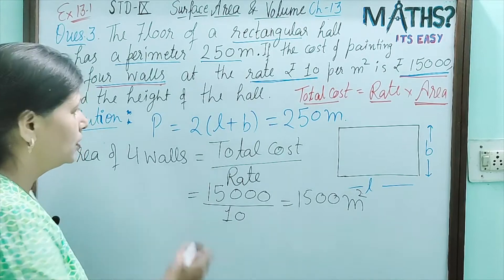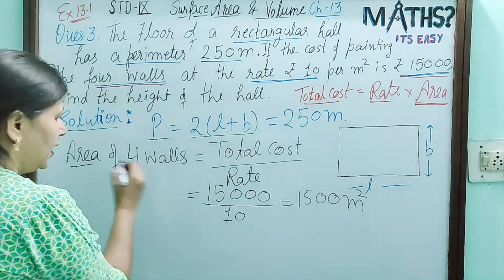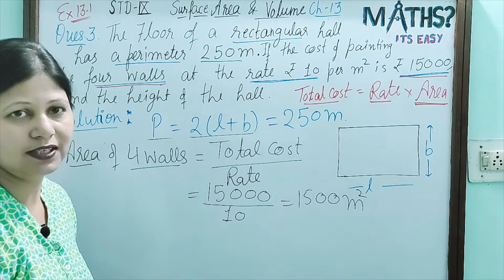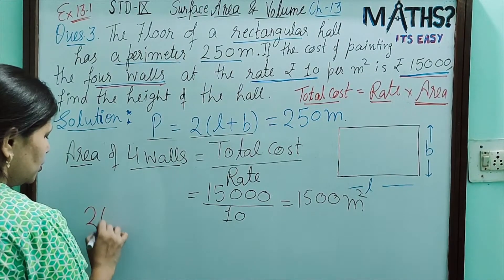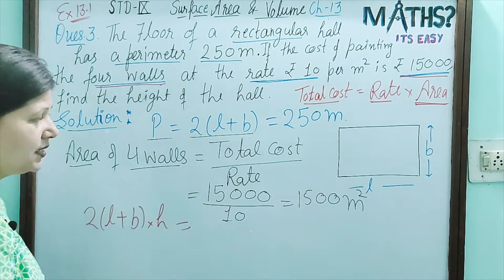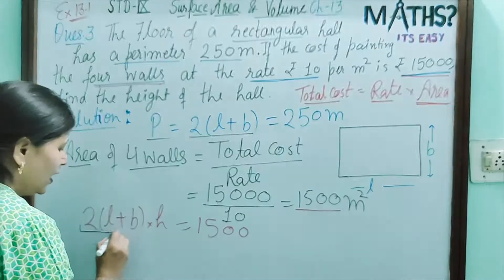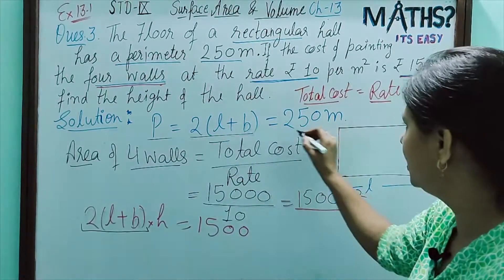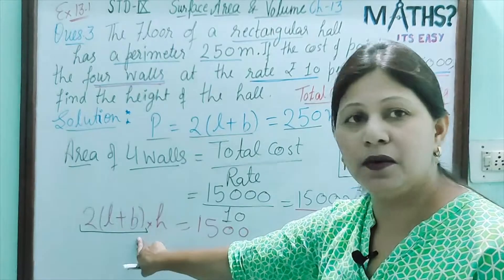Now, perimeter 2(L + B) is also given. We have calculated area of four walls, so write down the formula for area of four walls: 2(L + B) × H = 1,500. Here, 2(L + B) is the perimeter of the base, which is 250. So, substituting: 250 × H = 1,500.